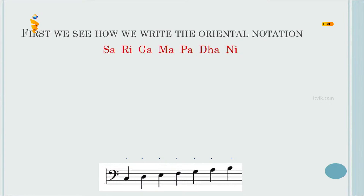Oriental notations are written as Sa, Ri, Ga, Ma, Pa, Da, and Ni. You can use singular notations for this. There are seven letters in oriental notation.